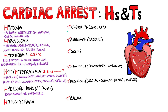Tension pneumothorax features a buildup of air in the pleural space that causes a shift in the mediastinum and obstructs venous return to the heart, which can result in cardiac arrest. Clinical signs include a trachea shifted away from the side with the pneumothorax, unilateral breath sounds, jugular vein distension, as well as signs of hemodynamic compromise such as hypotension or, of course, cardiac arrest.